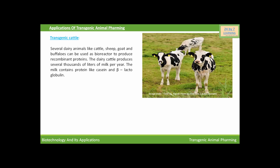Now we will see the applications of transgenic animal farming through different types of transgenic animals. First, we will start with transgenic cattle. Several dairy animals like cattle, sheep, goats, and buffaloes can be used as bioreactors to produce recombinant proteins. Dairy cattle produce several thousand liters of milk annually, and this milk contains proteins like casein and beta-lactoglobulin.